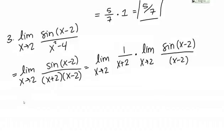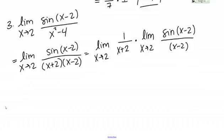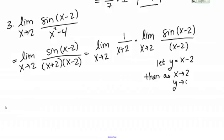The second limit looks like the special trig limit, but X is going to 2, not 0. Since I have X minus 2 as my factors, I'll make a substitution: let Y equal X minus 2. Then as X goes to 2, Y goes to 0. For the first limit, as X goes to 2, 1 over X plus 2 goes to 1/4 — that's continuous, I can just plug in 2.